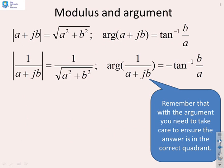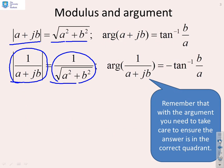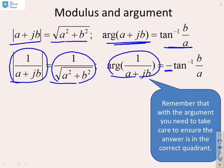Just a reminder of some key results. If you have a complex number a plus jb, the modulus is the root of a² plus b². If you put that same complex number in the denominator, the modulus of 1 over (a + jb) is 1 over the square root of a² + b². The phase of a + jb, or the argument, is tan⁻¹(b/a). The phase of the same complex number when it's in the denominator gets a minus sign. Remember with arguments you do need to be a bit careful with the quadrants in general.